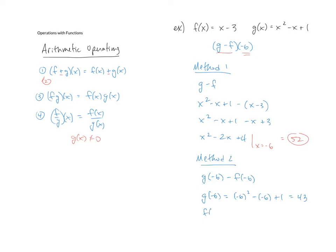f of negative six says go find function f. Every place you see an x put a negative six. So when we take negative six minus three we end up with a negative nine. Now remember we're taking this guy minus this guy. So 43 minus a minus nine gives us our positive 52 just like we came up with using the earlier method.